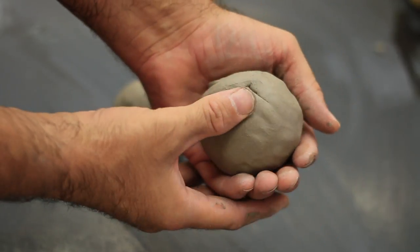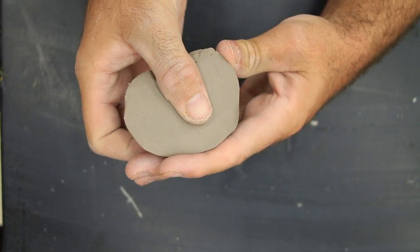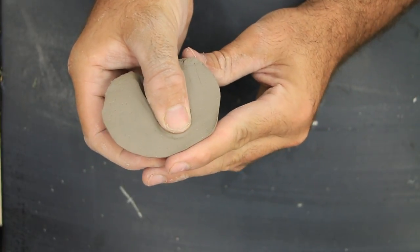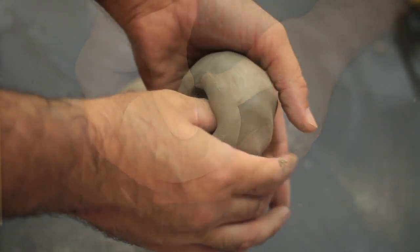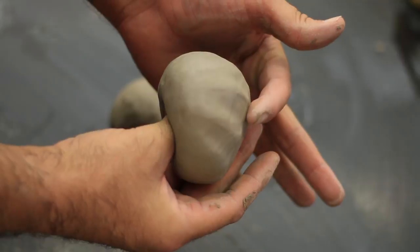Begin by holding the lump of clay in your hand and with your other hand, use your thumb to push down into the center of the clay. You want to go down far enough to only leave about a quarter or a half inch of clay at the bottom. If you don't go far enough, later on when we go to fire them, they can explode or just be really heavy.